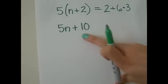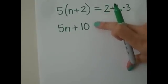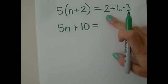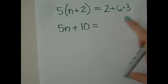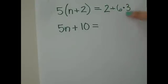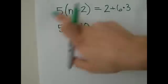So, 5n plus 10, we've got to bring down our equal sign. Equals. And now, for this side, over here we have addition and multiplication. When we see that dot there, that means multiplication. It can also be shown in parentheses, like we see here.